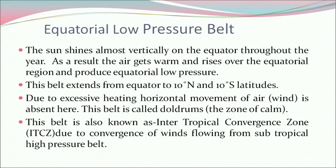Let's discuss the equatorial low pressure belt. The sun shines almost vertically on the equator throughout the year; as a result, the air gets warm and rises over the equatorial region, producing equatorial low pressure. This belt extends from the equator to 10 degrees north and 10 degrees south latitude. Due to excessive heating, horizontal movement of air (wind) is absent here. This belt is called doldrums — the zone of calm — also known as the intertropical convergence zone (ITCZ), due to convergence of winds flowing from the subtropical high pressure belt.